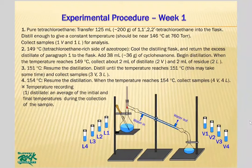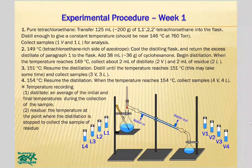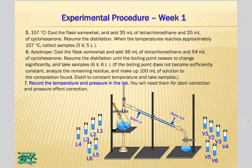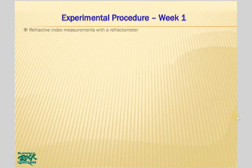The temperature of the distillate should be recorded by averaging the initial and final temperatures during collection. The temperature of the liquid residue should be recorded at the point when distillation is stopped to collect the residue sample. Apply the same procedure for steps 5 and 6 and collect samples 5L/5V and 6L/6V. Record the laboratory temperature and pressure — you will need them for stem correction and pressure effect correction.